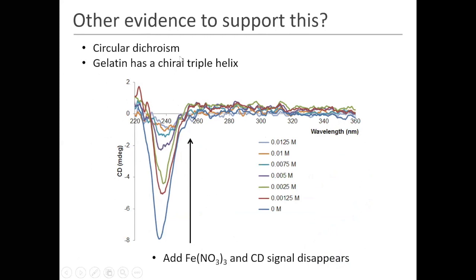Can we get other data to back up our conclusions from the neutron scattering? A nice technique is circular dichroism spectrophotometry, which looks for chiral regions within a system. Gelatin forms triple helices and they're chiral — they always rotate in the same direction. As we increase the concentration of iron, we lose the peak in the circular dichroism — we're basically losing our helices. This backs up the idea that as we add the iron, we're basically disrupting the gelatin helix and breaking apart this structure. The iron and the acidity are all contributing to the breakup of the gelatin system and formation of a different structure.